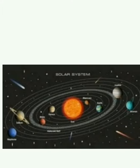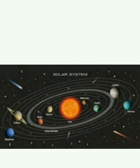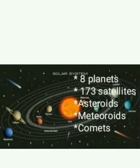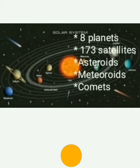Now I am going to ask a question: What is the solar system? The sun and its family is known as the solar system. It comprises 8 planets, 173 satellites, thousands of asteroids, meteoroids, and comets. We have already learnt about the 8 planets in detail. Now we are going to learn about meteoroids, asteroids, comets, and satellites.